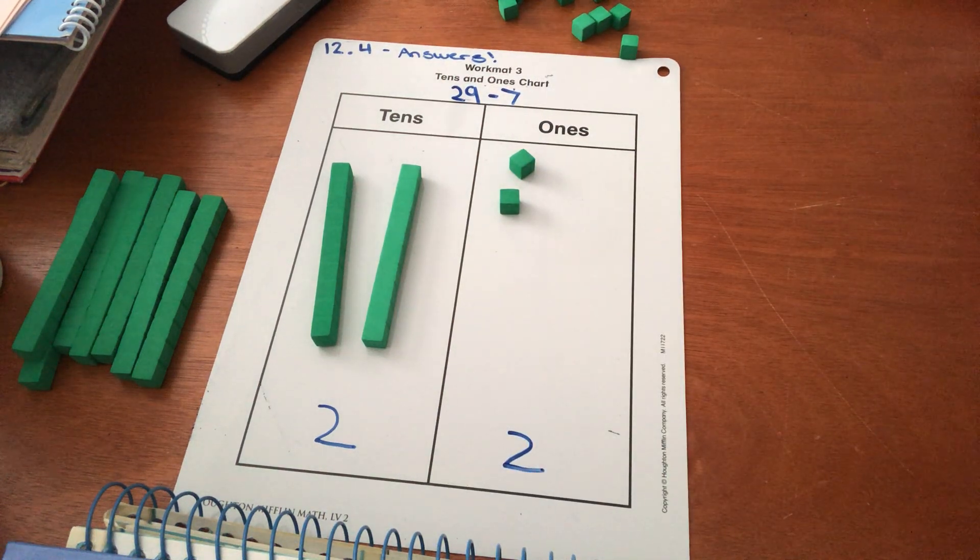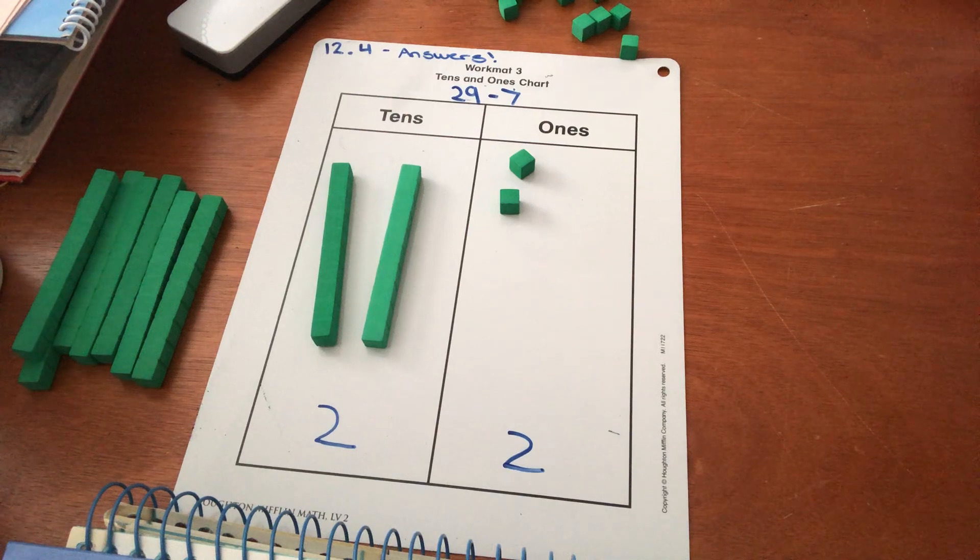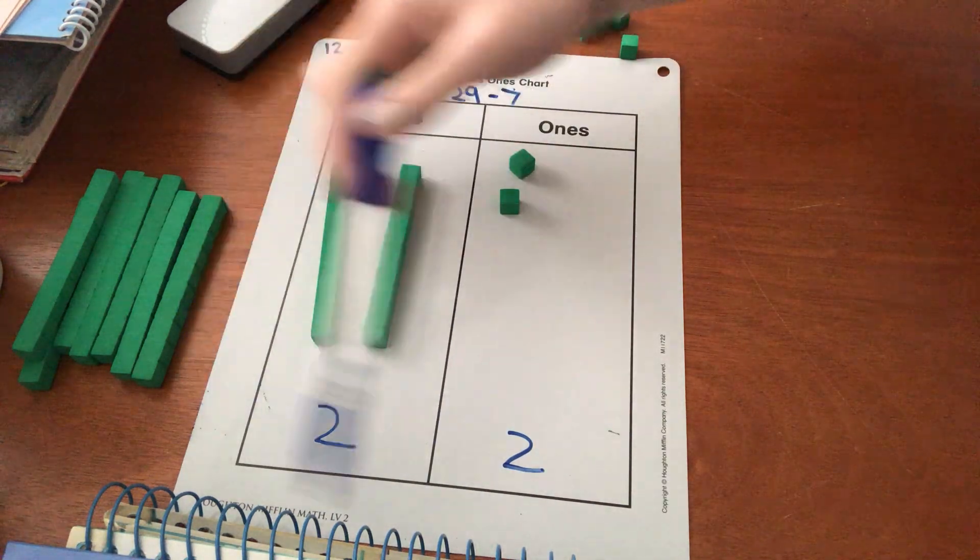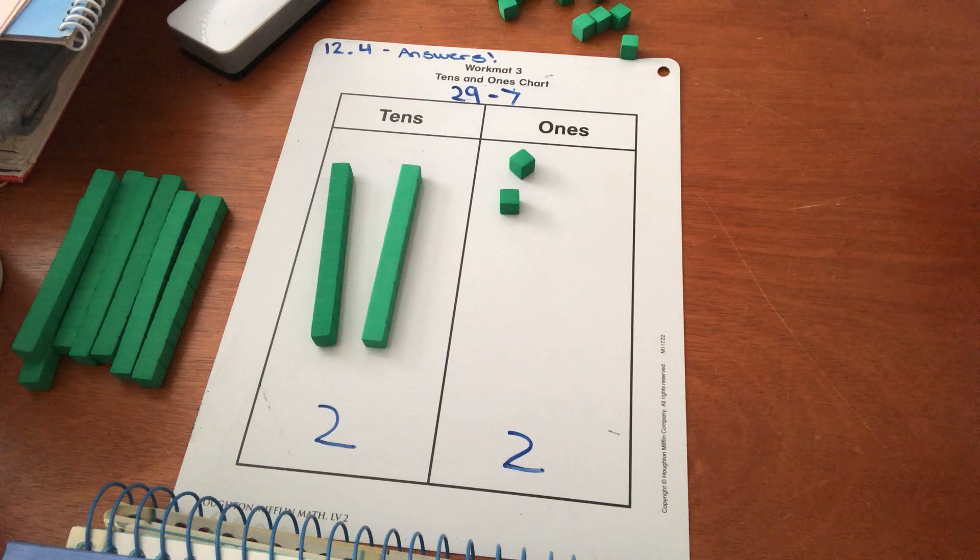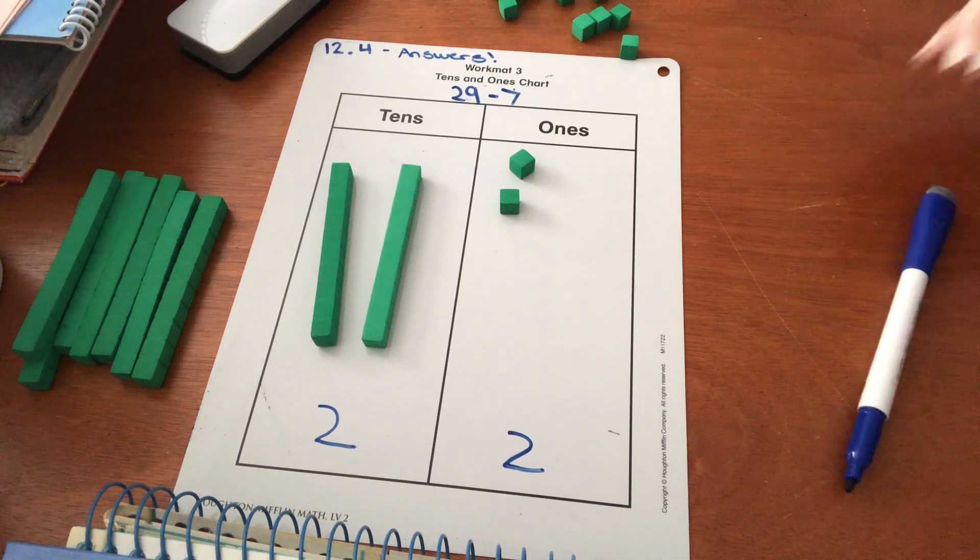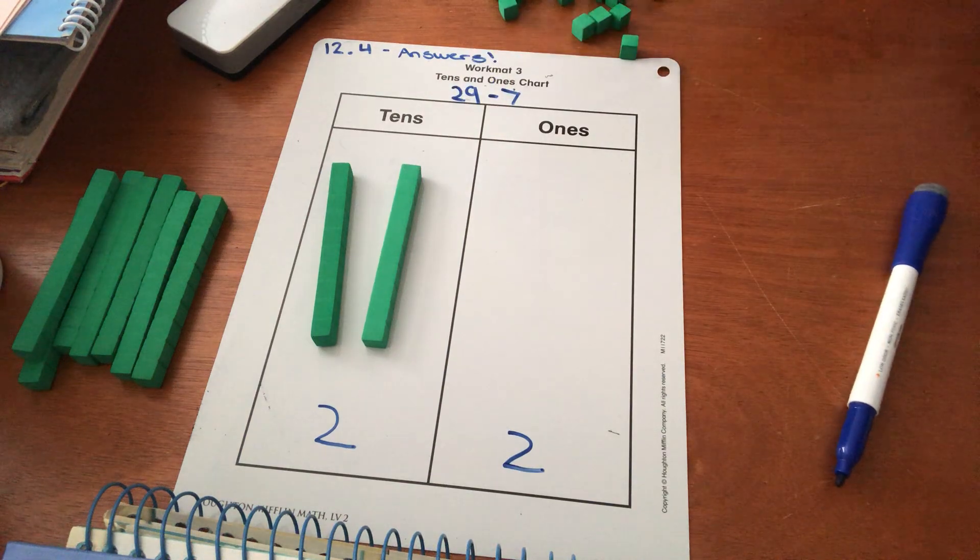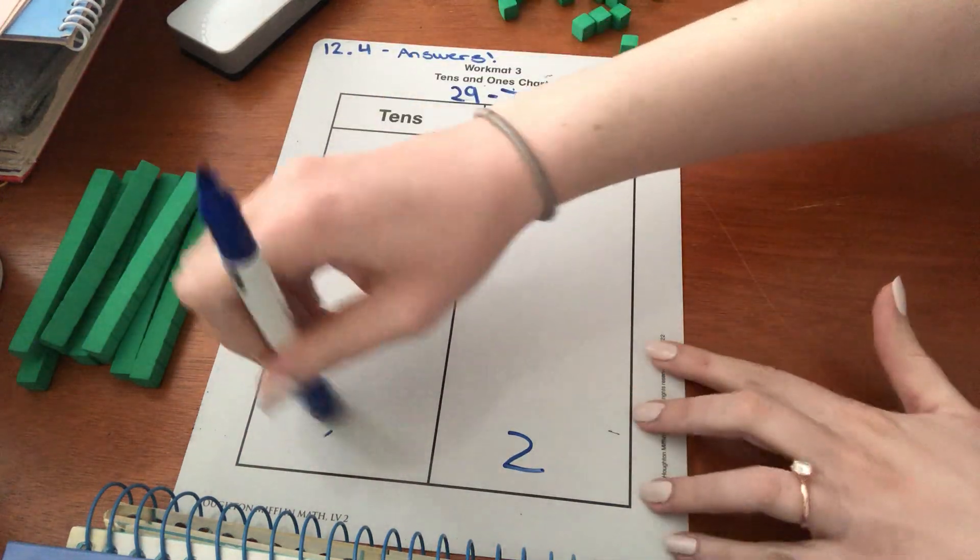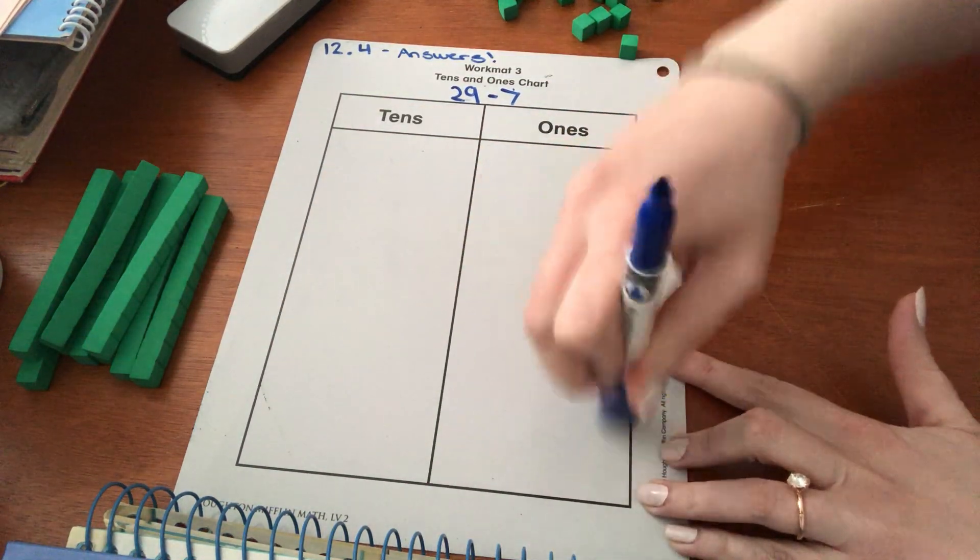Awesome. So my fourth column, what's the difference? What is this number? Amazing, super awesome job. That's 22. So that would be your answer for this question. The difference is 22.